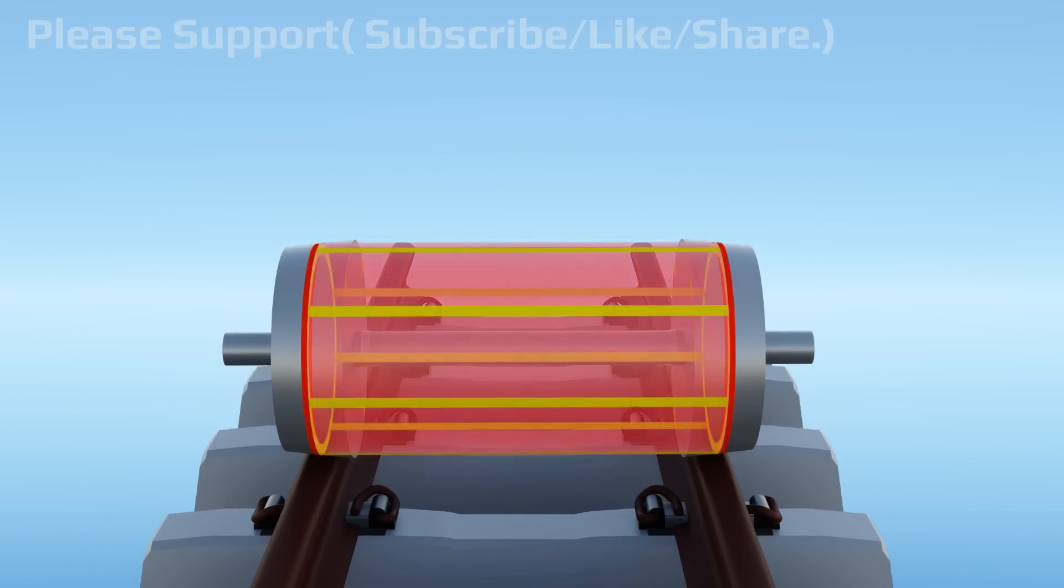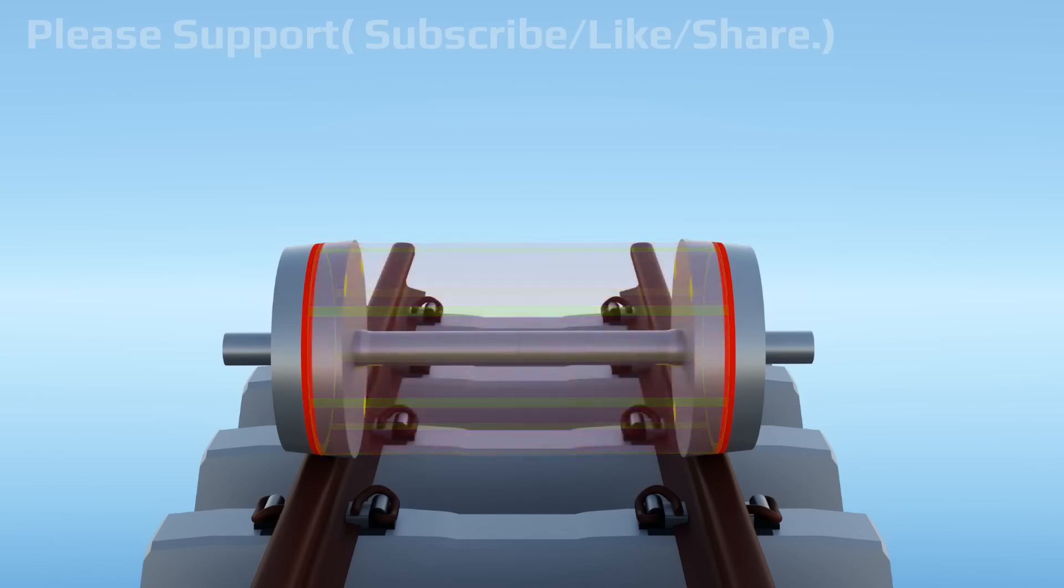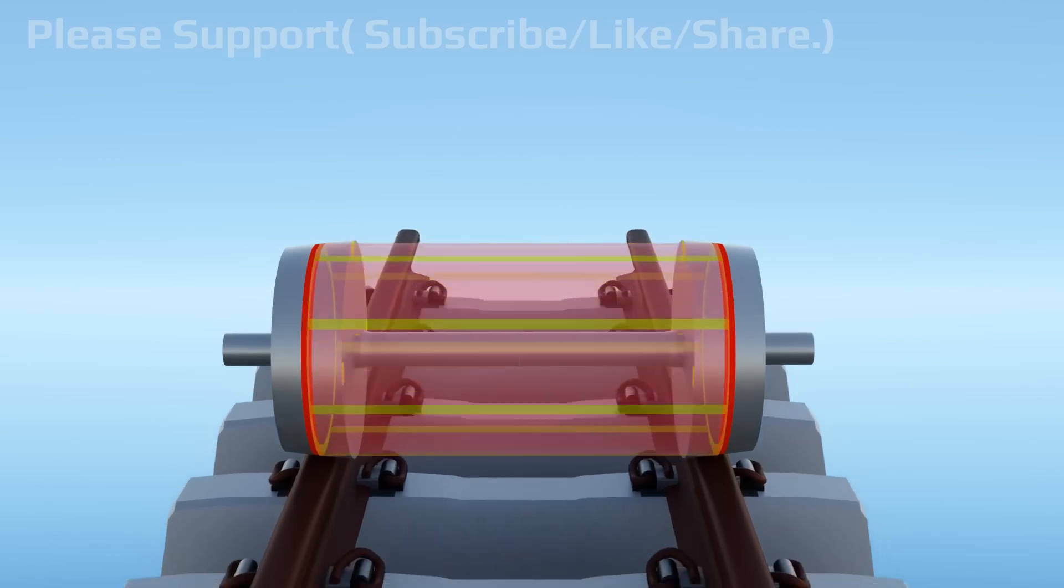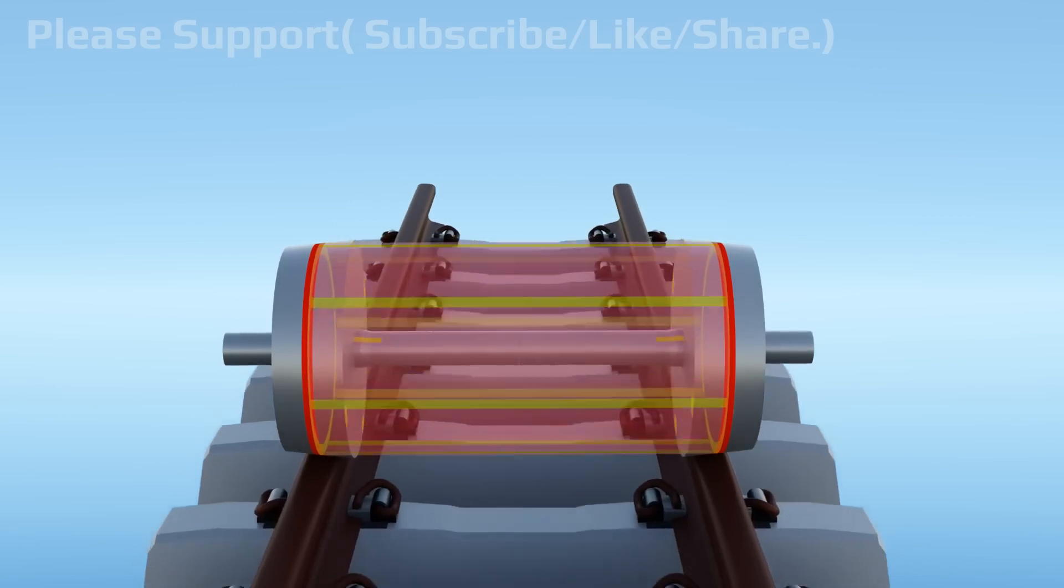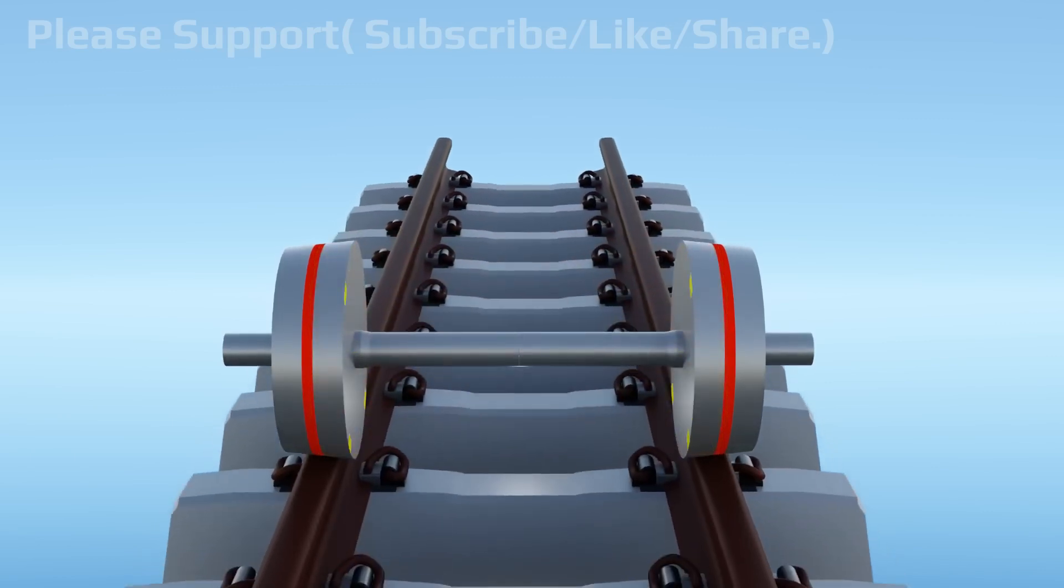Both side the running tread diameters are the same. That means this wheel set will act like a cylinder and will keep rolling straight over the rail track.